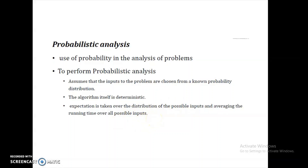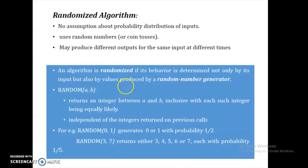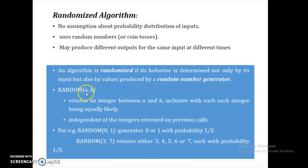For example, if you are taking N number of inputs, the output probability is taken in terms of these possible inputs. In the case of a randomized algorithm, there are no such assumptions about the probability distribution of inputs. Here they are using random numbers, and it may produce different outputs for the same input at different times. An algorithm is randomized if its behavior is determined not only by its input but also by values produced by the random number generator. We use a RANDOM function: RANDOM(a, b) will generate a number within the range of a to b.